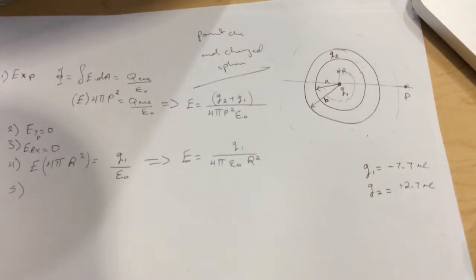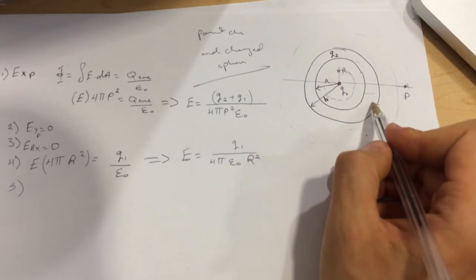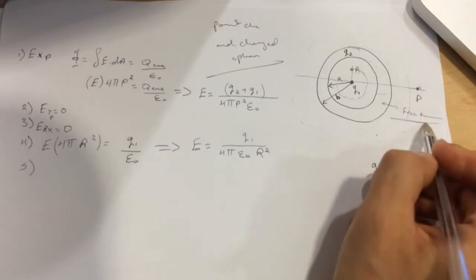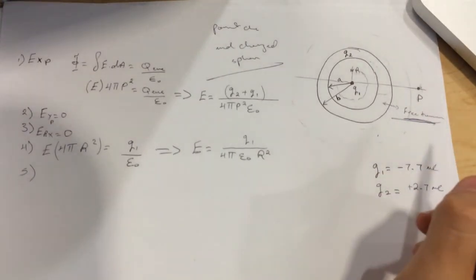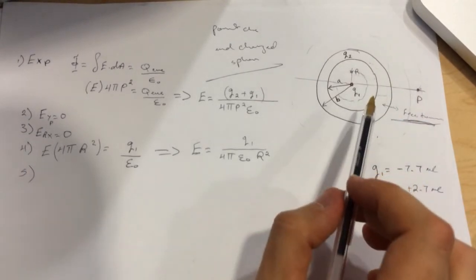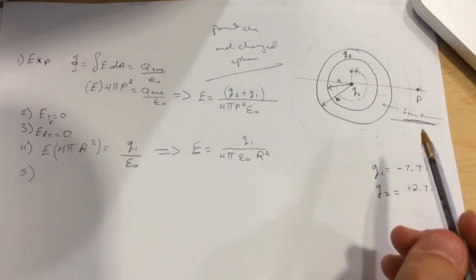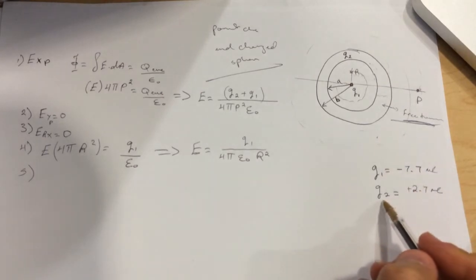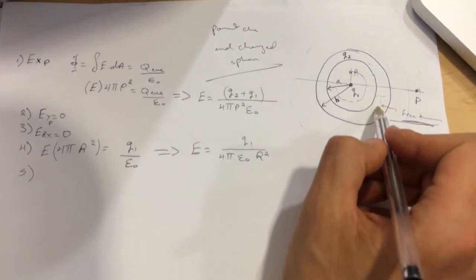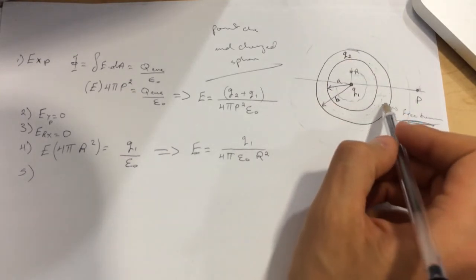This shell is a conductor, and conductor means that the charge is free to move. This is important to remember. Since we know the total charge is Q2 which is 2.7, and the electric field at this region should be zero.